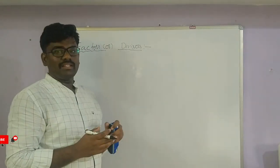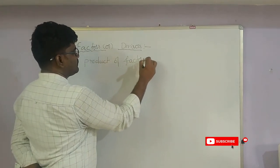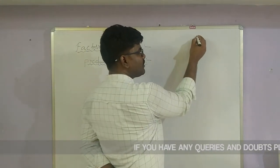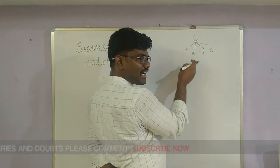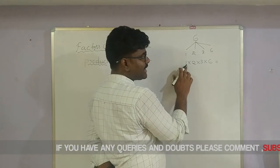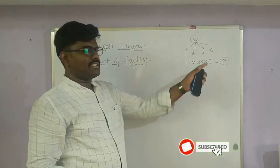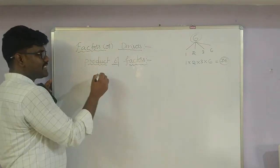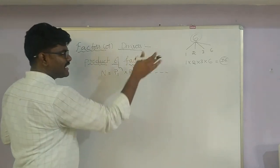Now let's look at the product of factors. What is the product of factors? Taking 6 as an example — factors of 6 are 1, 2, 3, 6. Product of the factors means we multiply them: 1 × 2 × 3 × 6 = 36. For small numbers we can write factors and multiply easily. For large numbers, we use prime factorization.